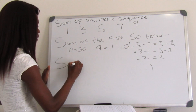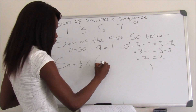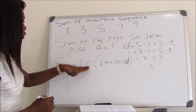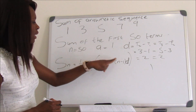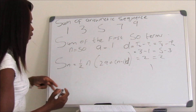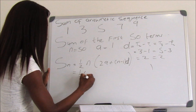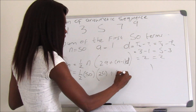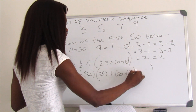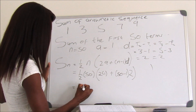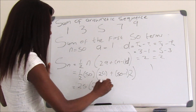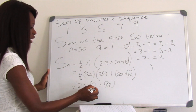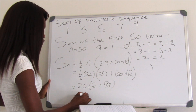We use the equation Sn = (1/2)n × (2a + (n−1) × d). We have n = 50, a = 1, and d = 2. Substituting: (1/2) × 50 × (2×1 + (50−1) × 2) = 25 × (2 + 49×2) = 25 × (2 + 98) = 25 × 100 = 2,500.